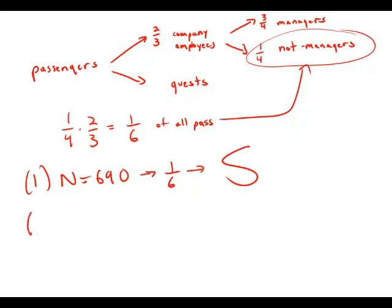Now forget about that statement. Move on to statement number two. Statement number two tells us there were 230 passengers who were guests of company employees. Well, two-thirds of the passengers were company employees. That means one-third of them were not. One-third of them were the guests.